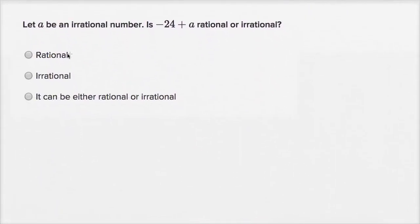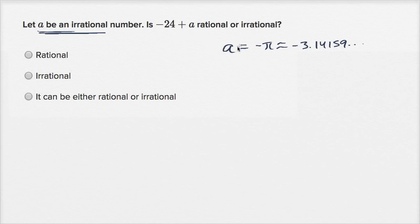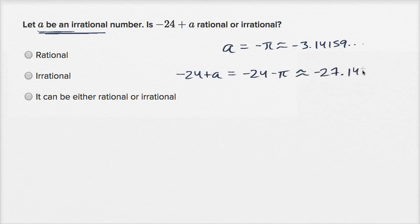We're told let A be an irrational number. Is negative 24 plus A rational or irrational? I won't give a formal proof here, but let's try some values. If A is equal to negative pi, which is approximately negative 3.14159 and keeps going on forever never repeating, then negative 24 plus A would be negative 24 minus pi, which is approximately negative 27.14159 — and everything to the right of the decimal is exactly the same as pi. So this looks like it's going to be irrational.